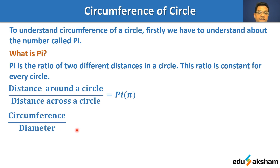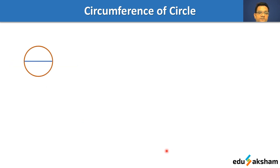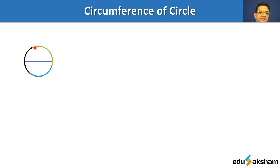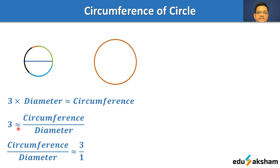We draw a circle with a diameter. If we wrap the diameter around the circle along its boundary, we can fit it once, then a second time, then a third time. After three diameters, the circle is almost covered but a little portion is still left uncovered. So three times the diameter is a little less than the circumference. We take it as approximately equal to the circumference, so the ratio of circumference to diameter is approximately equal to 3, or 3 by 1.